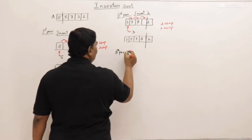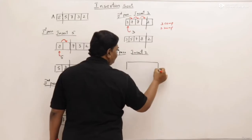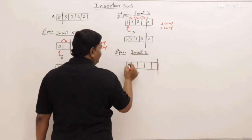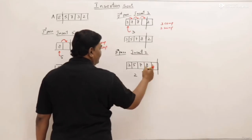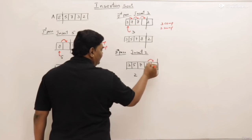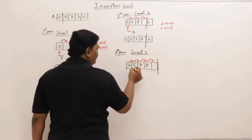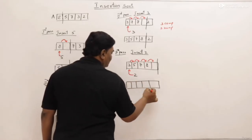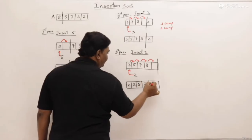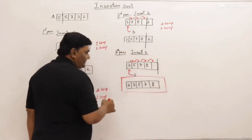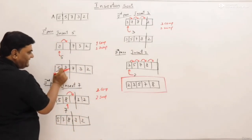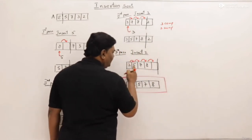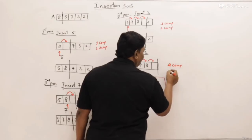One last element remains: two. This is the fourth pass — insert two. The list size is now maximum. The presently sorted elements are three, five, seven, eight. Start comparing and shifting: eight is greater than two, shift; seven also shifts; five also; three also. Then two is placed at this position. The final array is two, three, five, seven, eight — sorted. In this pass, four comparisons and four swaps were done.